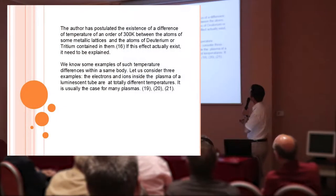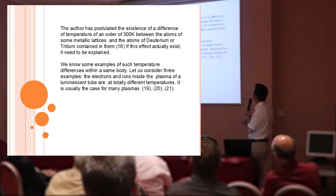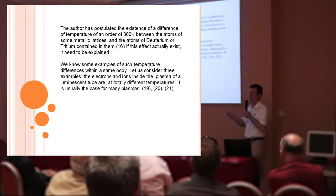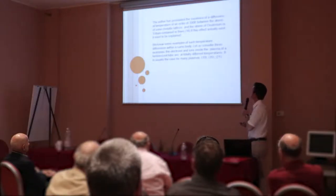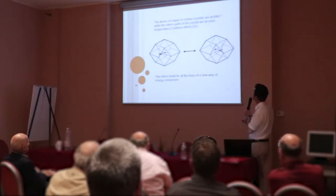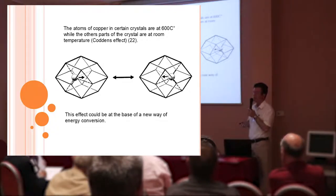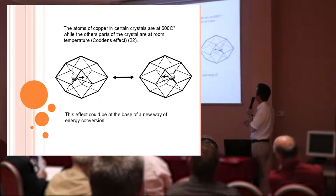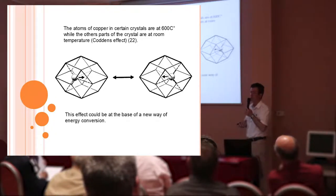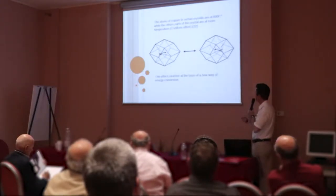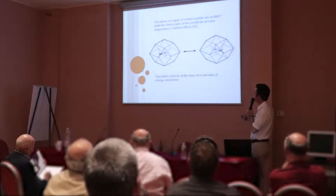There are some examples of temperature difference in the same body. Let us consider only three examples. The electrons in the luminescent tube are at totally different temperatures than the ions. It's the case in many plasmas. In some quasi-crystals, it was proved by neutron diffraction that the atoms of copper are at 600 degrees Celsius over room temperature. It's the Codens effect. It was published more than 20 years ago.